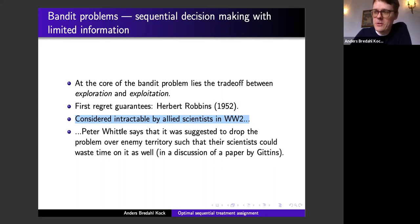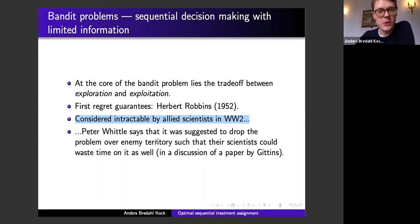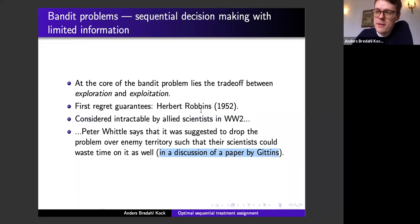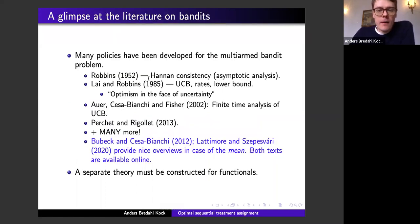The first paper providing regret guarantees when focusing on the mean is by Herb Robbins from 1952. An interesting historical anecdote: during World War II this problem of designing policies with good statistical properties was considered intractable by Allied scientists. Peter Whittle mentions it was suggested to drop the problem over Germany during the war so their scientists could waste their time on it as well.